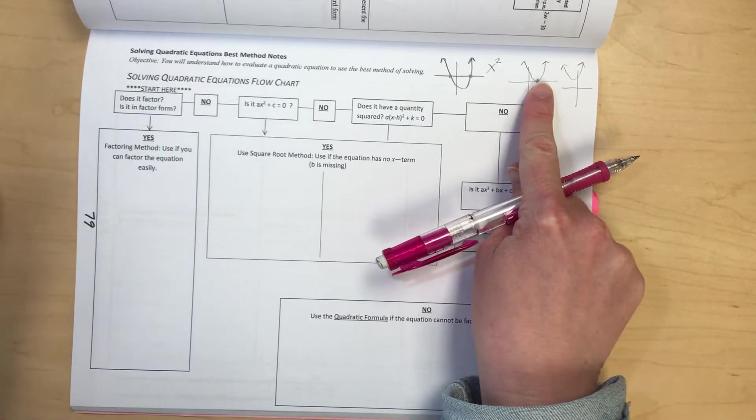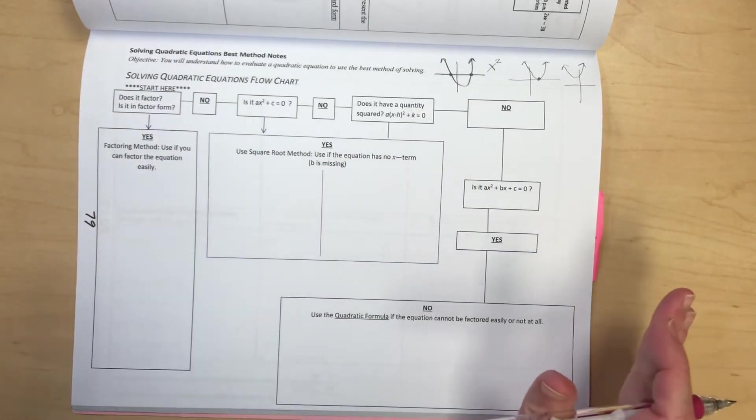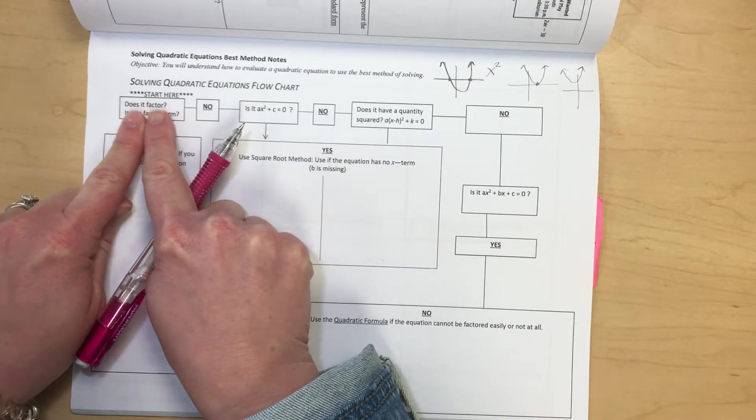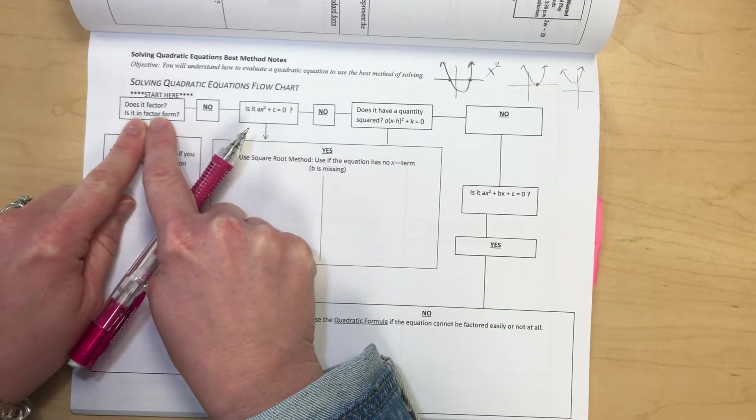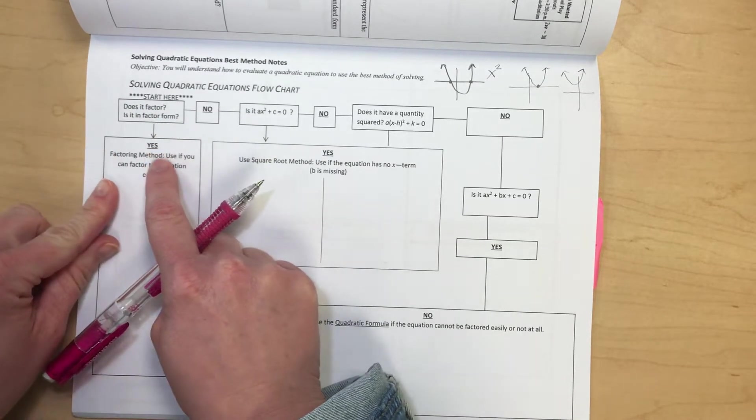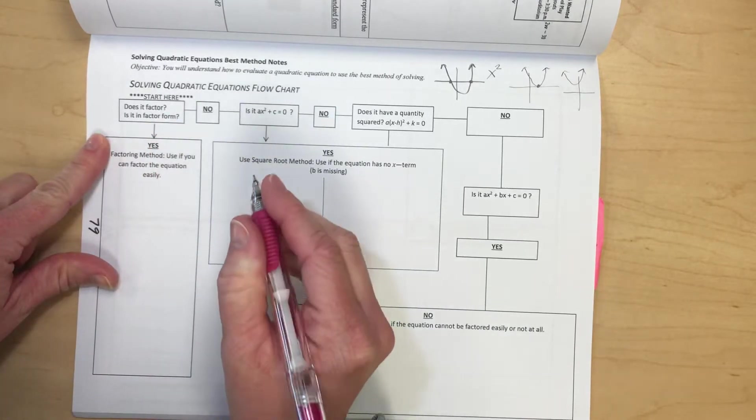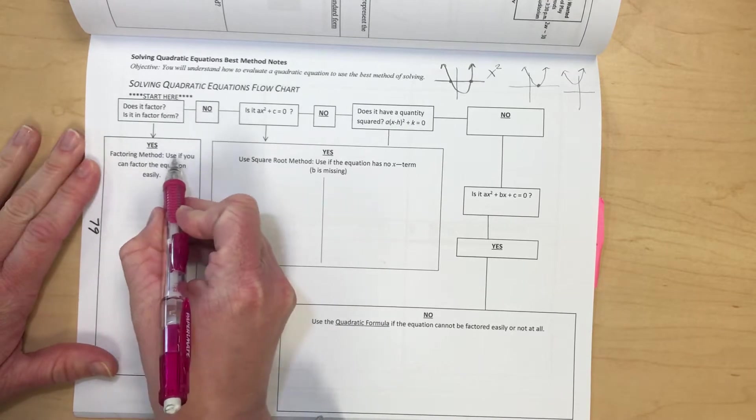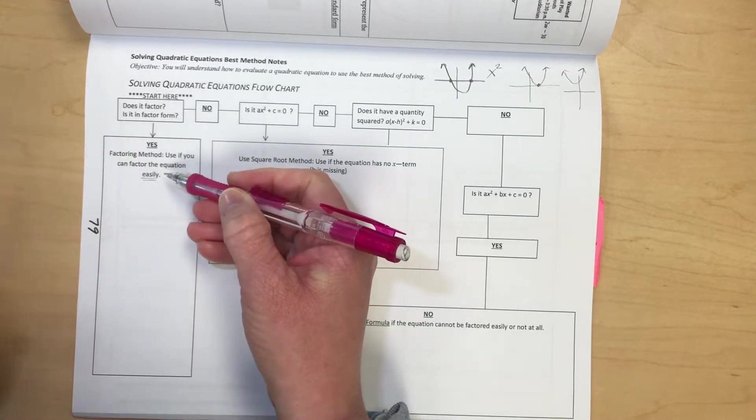In my class, I've taught three methods, and I'm going to go through how do you know which method to use, when, and why. So start here. First, I ask my students, does it factor? And if it is already in factored form, then it's already been factored for you. If you can factor easily, and I mean really easily, then use this method.